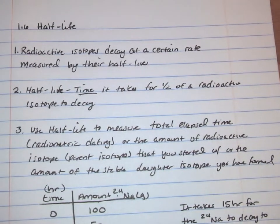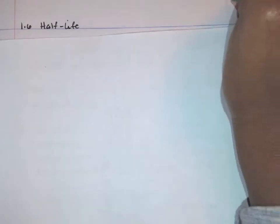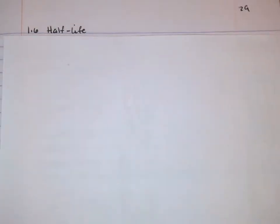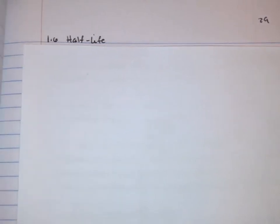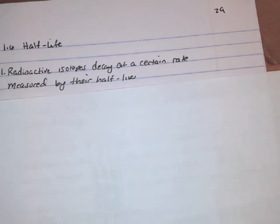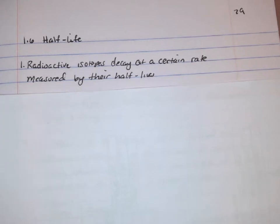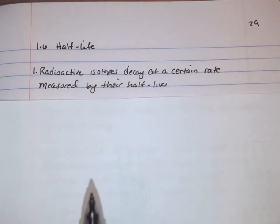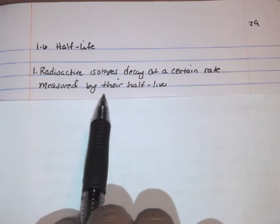Hi, welcome to the notes video on Half-Life. All you need to do here is take down the notes so you can prepare yourself for the next class. This is section 1.6, Half-Life notes, starting on page 29, so make sure you have the page number and include it in your table of contents. We learned before about radioactivity and decay, so now let's talk about radioactive isotopes, which are isotopes that are radioactive and decay at a certain rate measured by their Half-Lives.